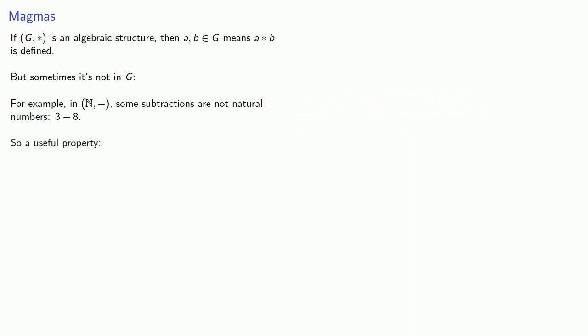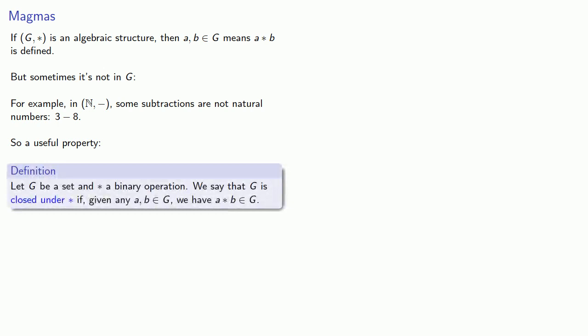And so this suggests a useful property. Let G be a set and star a binary operation. We say that G is closed under star if, given any A and B in G, we have A star B also an element of G.